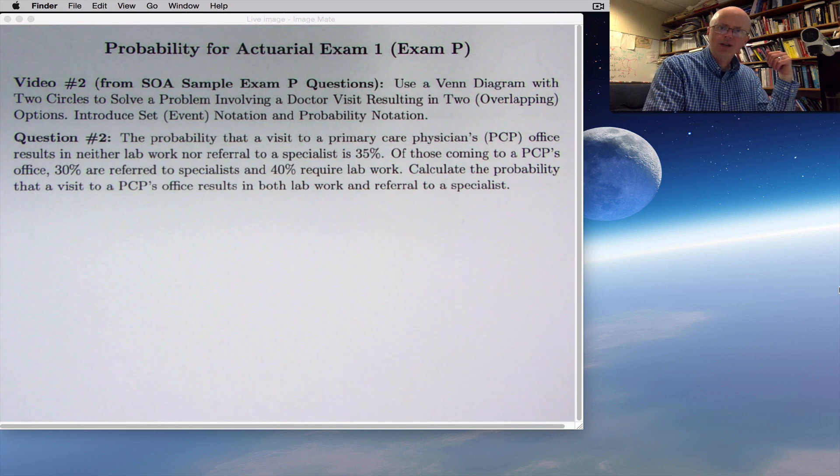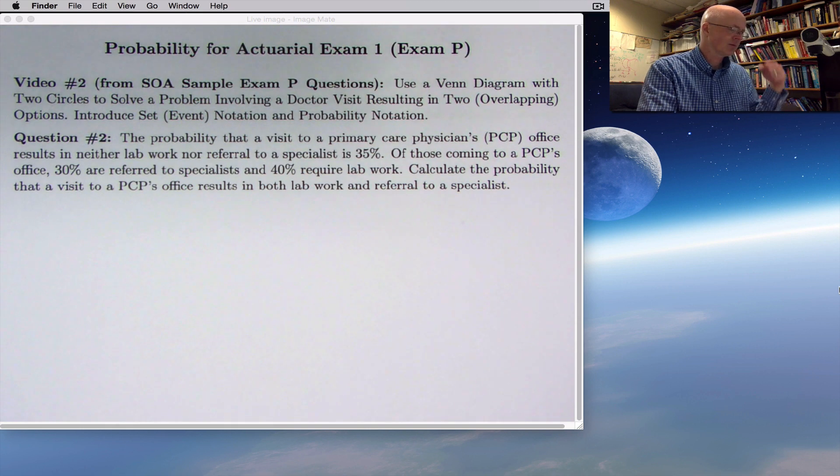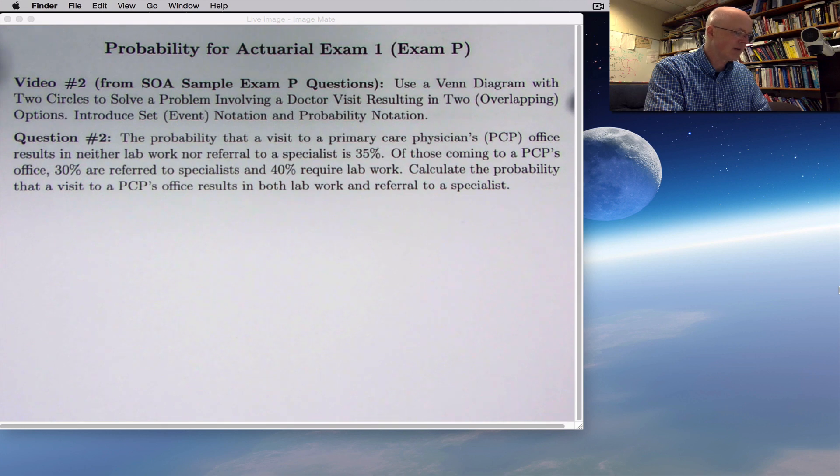Then I will show you the notation, and as in the last video, I will show you some Mathematica code that will make a diagram helpful for future videos. The goal here is to use a Venn diagram with two circles to solve a problem involving a doctor visit resulting in two overlapping options that could occur at the same time.